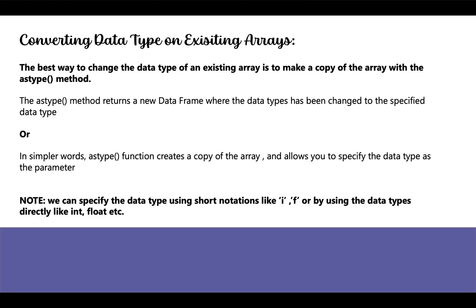The question arises: how to convert a data type on existing arrays? The answer is — the best way to change the data type of an existing array is to make a copy of the array with the astype method. The astype method returns a new array where the data type has been changed to a specified data type.